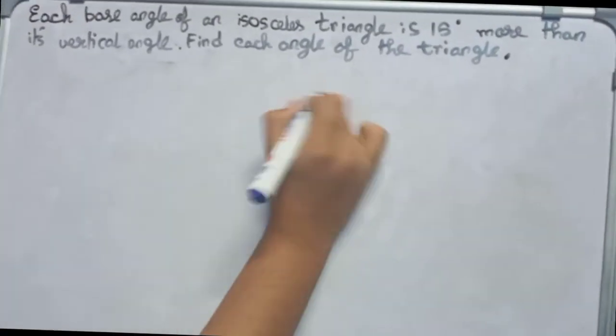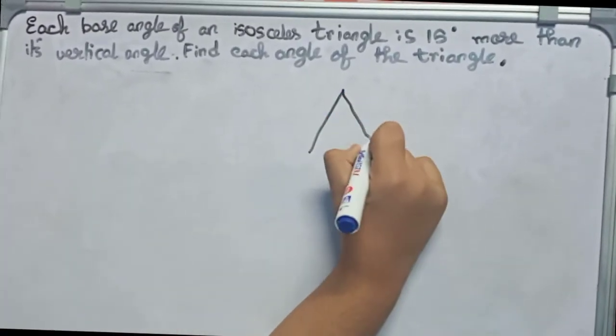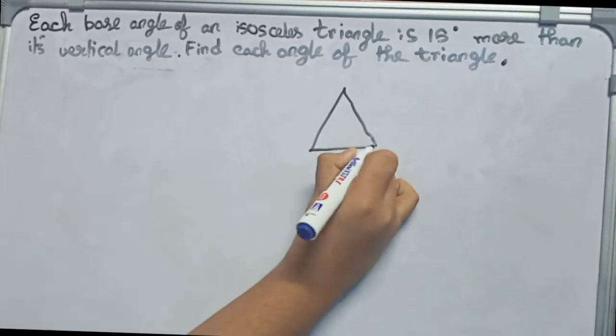So let's start. First, draw a rough diagram of the isosceles triangle. Let it be our triangle.